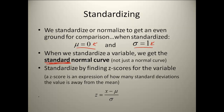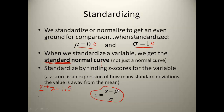We do the standardizing by finding the z-scores. A z-score is always an expression of how many standard deviations a value is away from the mean. So if we have a z-score of 1.5, that means that whatever original value has that corresponding z-score, this original value is 1.5 standard deviations away from the mean. Our z-score formula is z = (x − μ) / σ, where x is your particular data value, μ is your original mean, and σ is your original standard deviation.